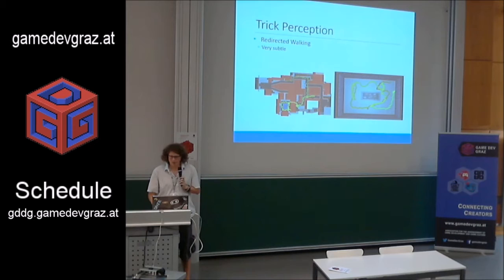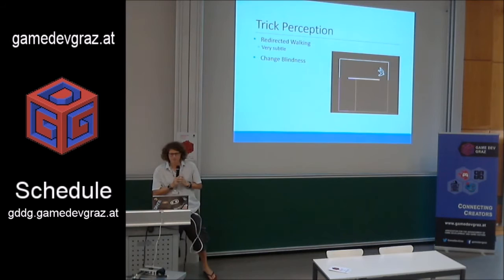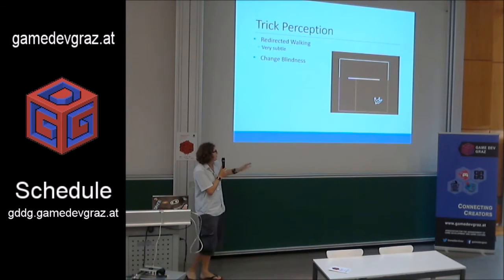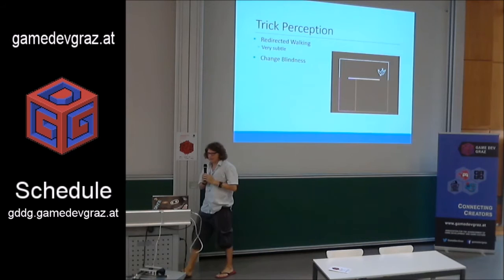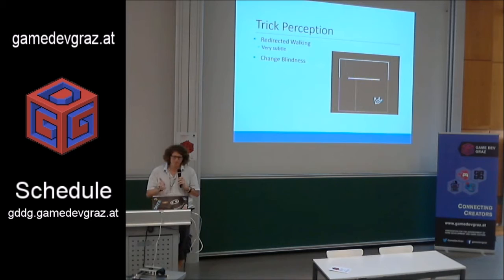Another great approach is change blindness — where you change the world around the player when they're not looking. For example, in this demo there's one big room, and when the player enters the hallway, the room switches and the other one gets bigger. This way you extend the virtual world a little bit, and can fake a bigger space than your actual tracking space is. But this is rather limited and takes a lot of trickery.